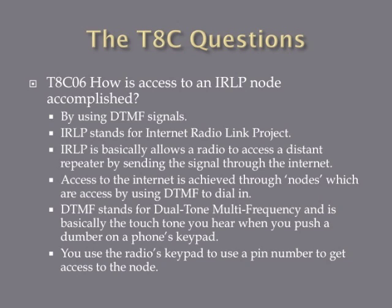How is access to an IRLP node accomplished? The answer is by using DTMF signals. IRLP stands for Internet Radio Link Project, and it allows a radio to access a distant repeater by sending the signal through the Internet. You can access a repeater in Washington State if you're in Ohio by sending your signal through the Internet. Access is achieved through nodes, accessed by using DTMF — Dual Tone Multi-Frequency — which is essentially the touch tone you hear when you push a number on your telephone's keypad. Use your radio's keypad to dial into these nodes to get access to IRLP.